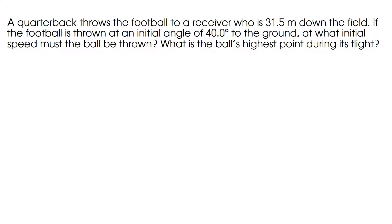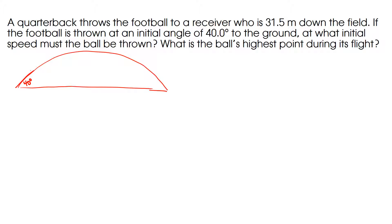This problem is a little bit more challenging. A quarterback throws a football to a receiver who is 31.5 meters down the field. If the football is thrown at an initial angle of 40 degrees to the ground, at what initial speed must the ball be thrown? What is the ball's highest point during its flight? We're still dealing with non-horizontal projectile motion, but now we're finding a different variable. As before, I'll start with a picture. My initial launch angle is 40 degrees and I have V0. V0x equals V0 times cosine of 40 degrees, and V0y equals V0 times sine of 40 degrees — that's what the trig tells us. I also know that my delta-x is 31.5 meters.